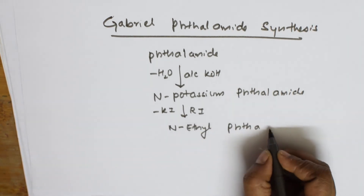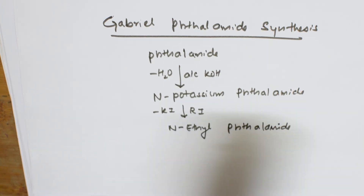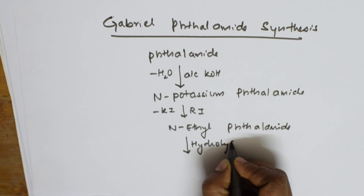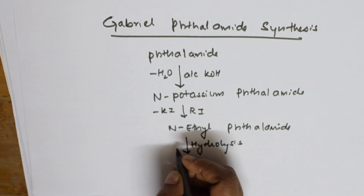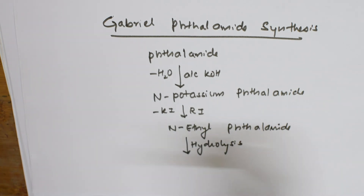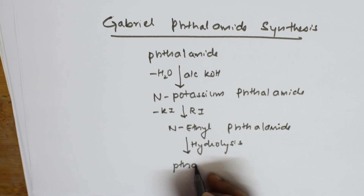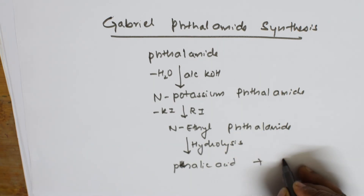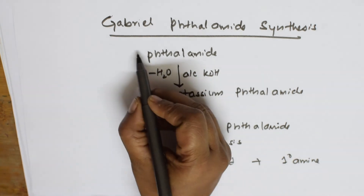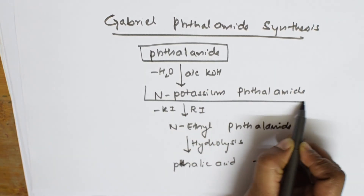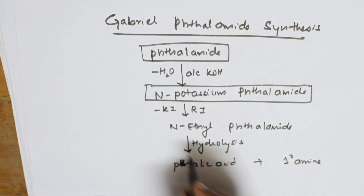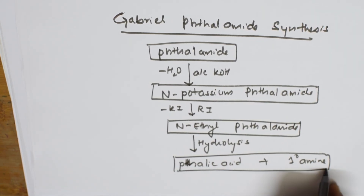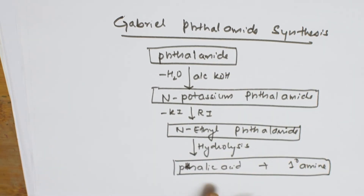To this N-ethyl phthalimide we perform hydrolysis — adding water, OH on both sides — and we get a compound called phthalic acid. But the main product which we are going to prepare is primary amine. So the first reactant is phthalimide, and the final products are phthalic acid and primary amine. Thank you for watching students — I will meet you again with the next reaction mechanism.